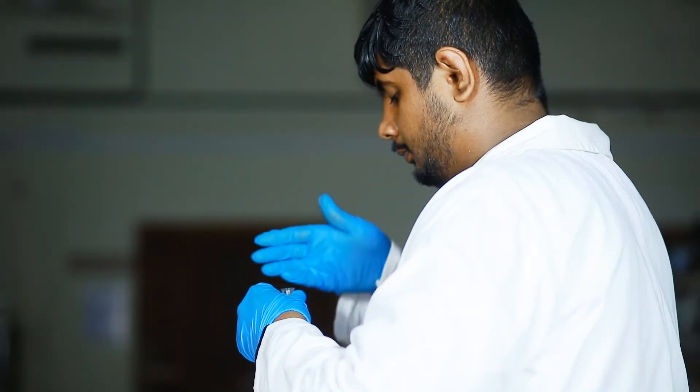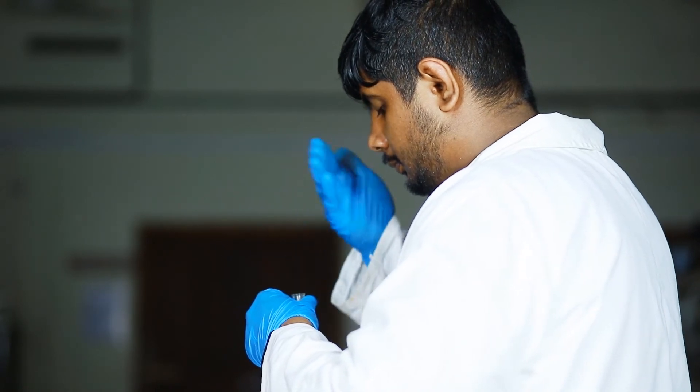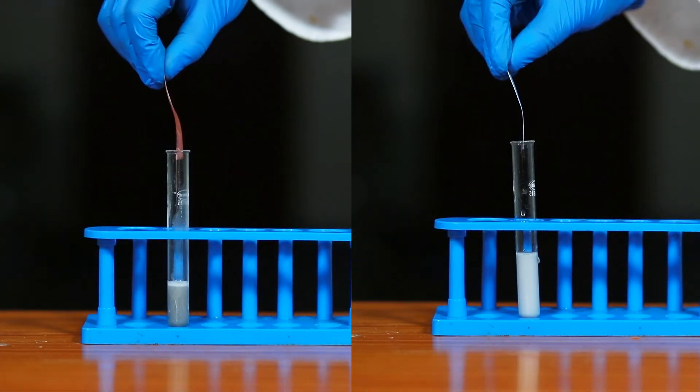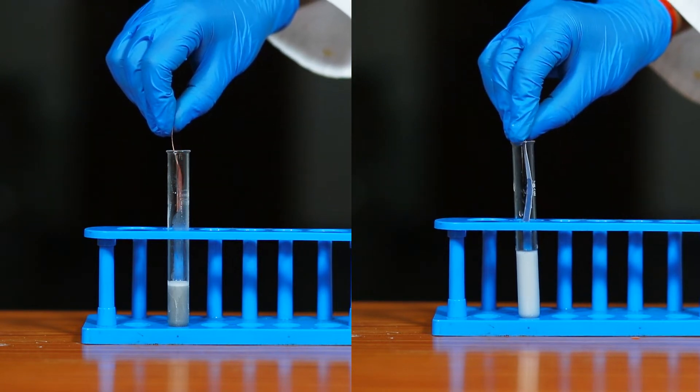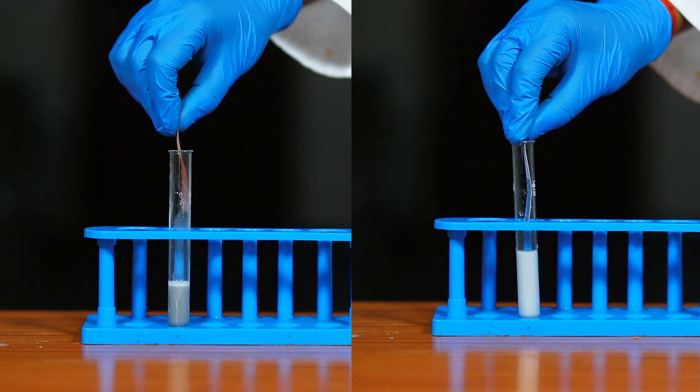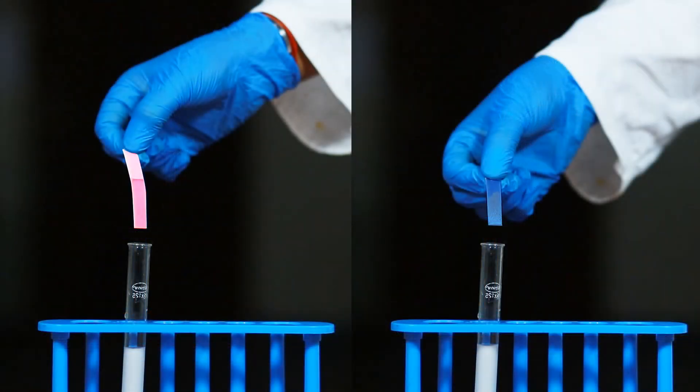There will be no smell for the liberated gas. Then conduct a litmus test by bringing the moist blue and red litmus papers to the mouth of the test tube when gas is liberating. We observe that red litmus stays red and blue litmus stays blue.